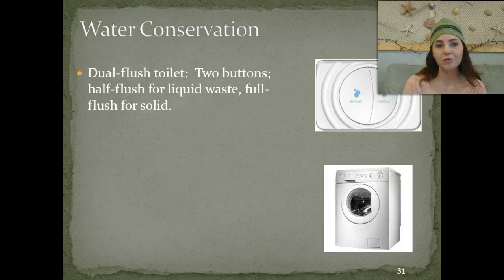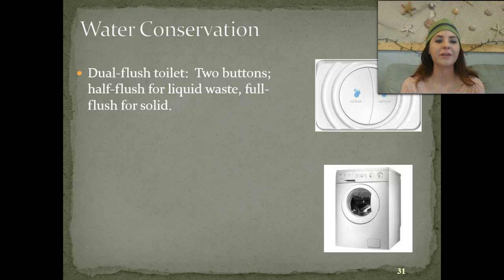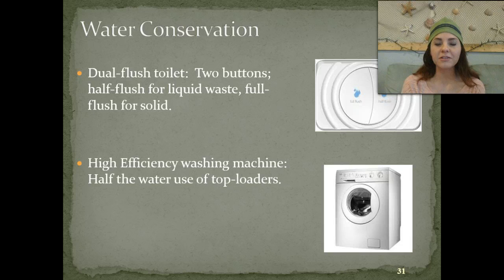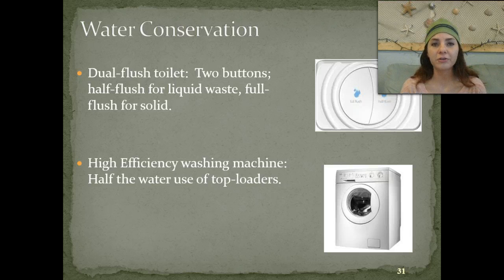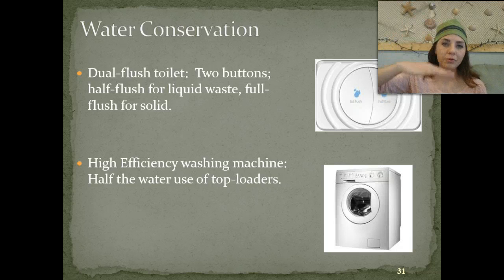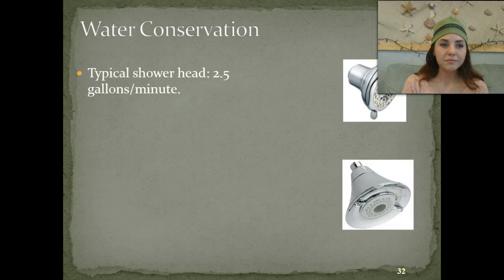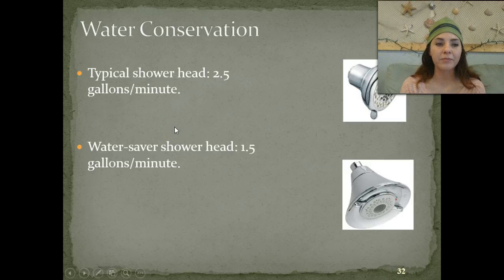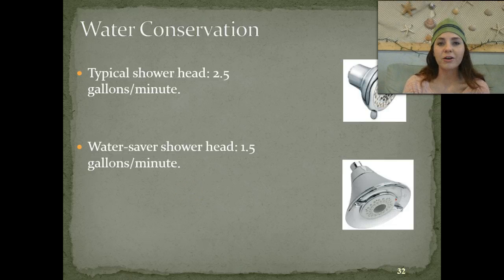How can we help conserve water? We have the dual flush toilet — it has two buttons, with a half flush for liquid waste and a full flush for solid waste. We also have high efficiency washing machines. If you see 'HE' on detergent, that means high efficiency — those are the front-loading washers, which use a lot less water than the older top-loading washers. Another option is a water-saving shower head. The typical shower head releases about two and a half gallons per minute, while the water-saving shower head releases only about 1.5 gallons per minute, saving an entire gallon of water for each minute you're in the shower.